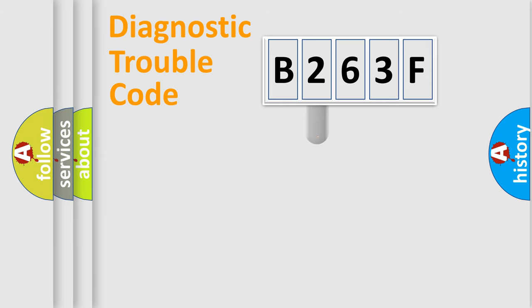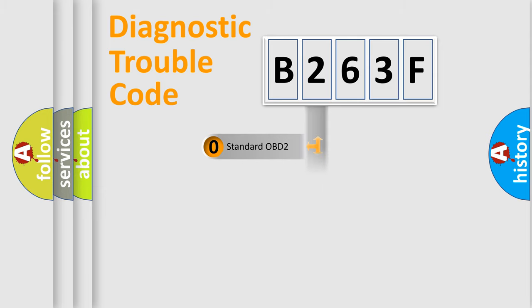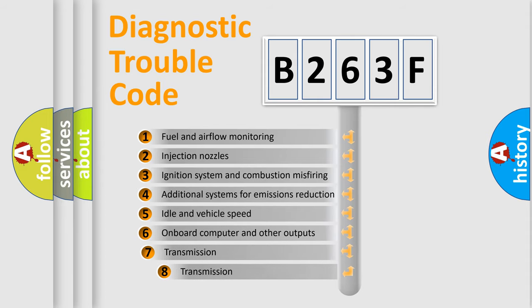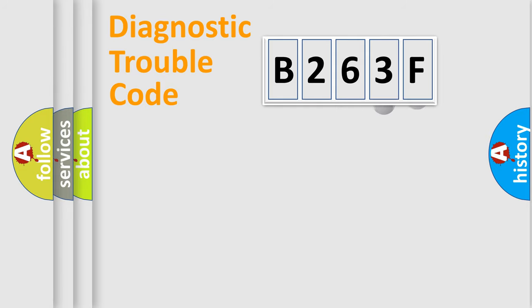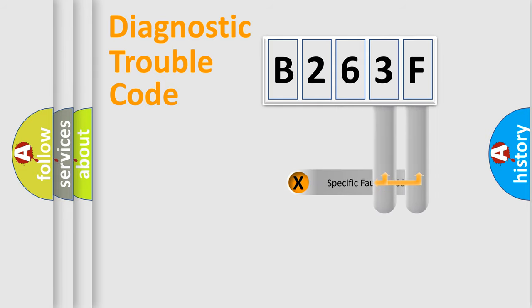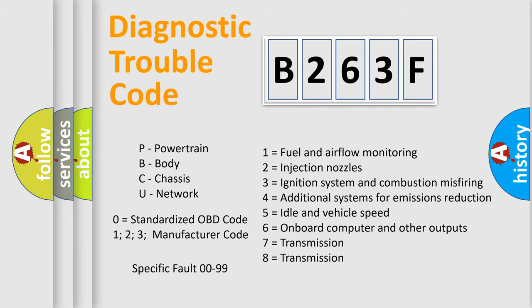This distribution is defined in the first character of the code. If the second character is expressed as zero, it is a standardized error. In the case of numbers 1, 2, or 3, it is a more manufacturer-specific expression of the car error. The third character specifies a subset of errors. This distribution is valid only for the standardized DTC code, and only the last two characters define the specific fault of the group.